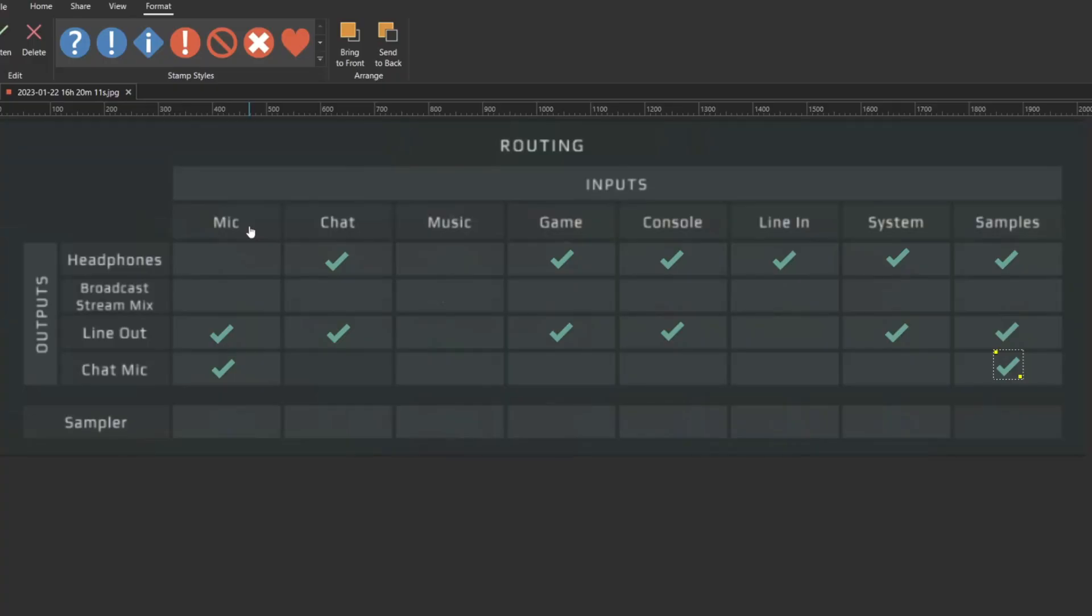Now let's go into the GoXLR software on our gaming PC and set up the routing table. There are several ways to do this, but here's how I would set it up. Starting with your microphone, make sure you route it to your line-out and your chat mic. Remember that your line-out will go to your streaming PC.